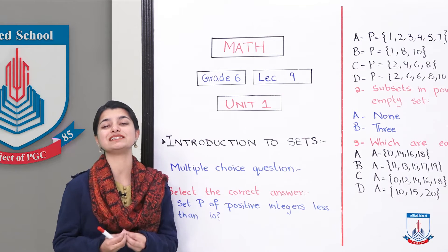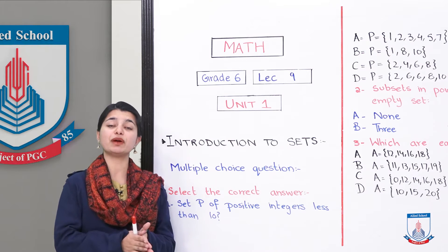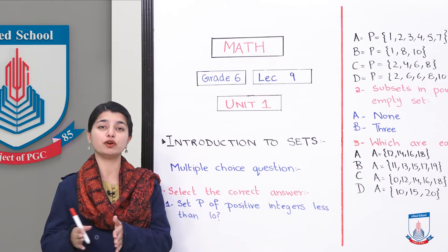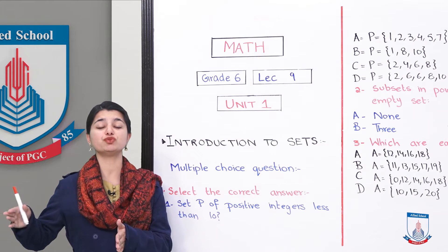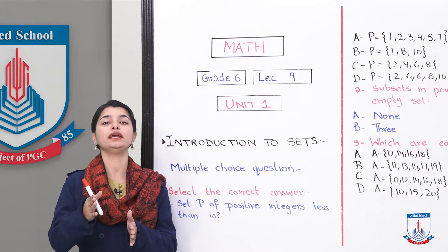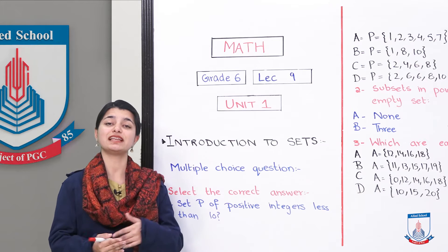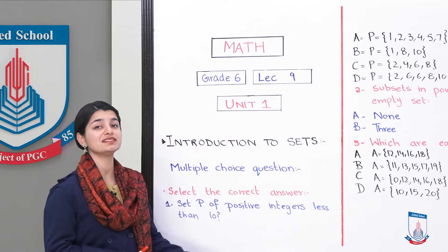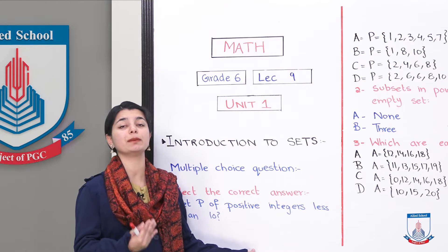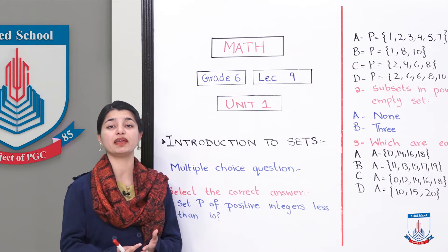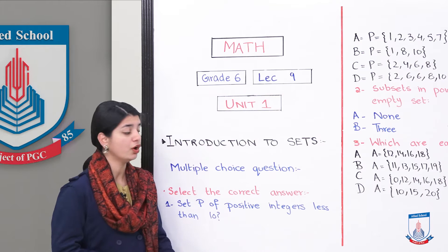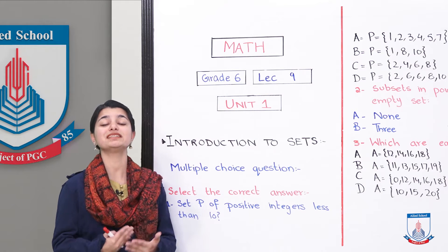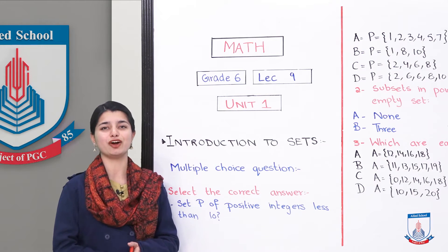Positive integers are the counting numbers 1, 2, 3, 4 and so on. Integers also include negatives, going from 0 in both directions to infinity, just like positive integers. Here we need positive integers that are even and less than 10. So let's see our options.